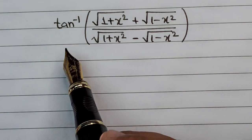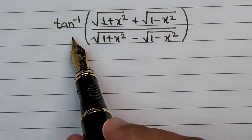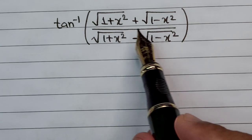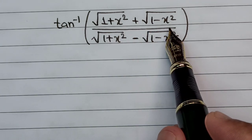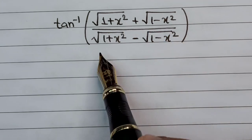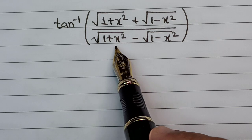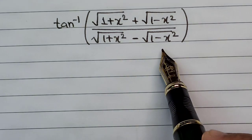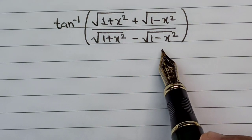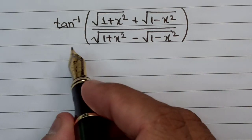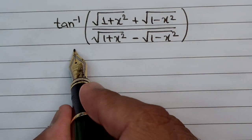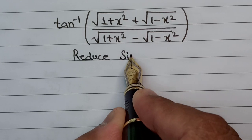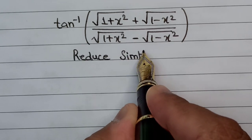The problem at hand is tan inverse of (√(1+x²) + √(1−x²)) divided by (√(1+x²) − √(1−x²)), and the target is to reduce this into the simplest form possible.